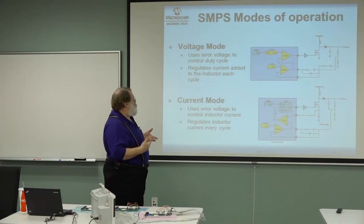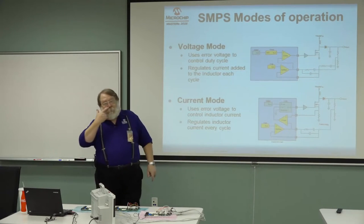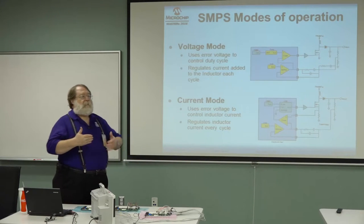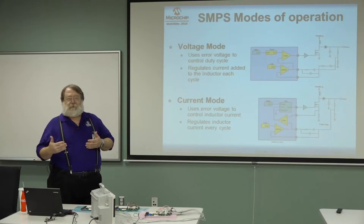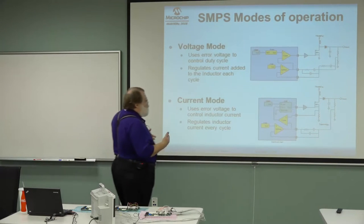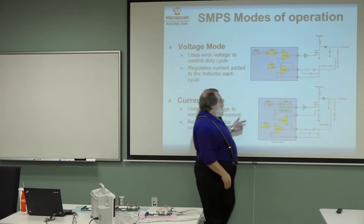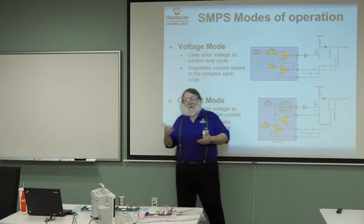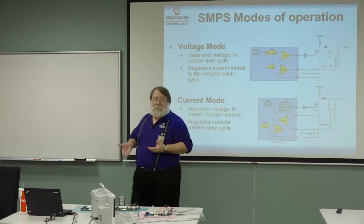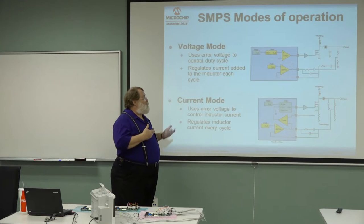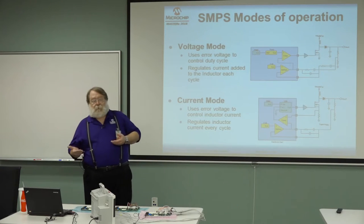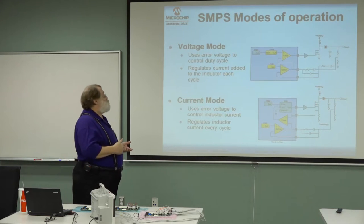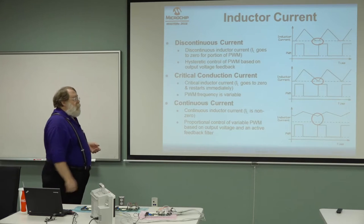There is one remaining problem with current mode near 50% duty cycle, referred to as slope compensation. Due to the characteristics of the inner current loop, at half the switching frequency there is a gain peaking and sensitivity to noise, resulting in oscillation at half the switching frequency. Fortunately, we have CIPs that work to correct that problem, and one of our demos will show exactly how that works.